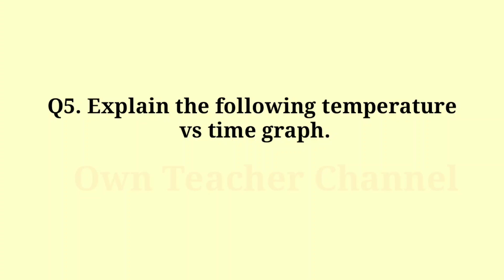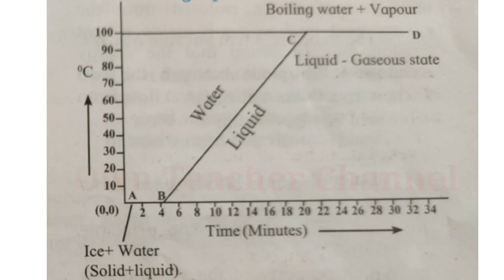Question 5: Explain the temperature versus time graph. This graph demonstrates the behavior of water when heated continuously and uniformly. Line segment AB denotes conversion of ice at 0°C into water at 0°C. Line segment BC indicates continuous rise in temperature of water from 0°C to 100°C. At point C, the boiling point of water is reached and heat energy supplied further is used to convert water into steam. Line segment CD denotes conversion of water at 100°C into steam at 100°C.